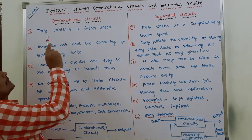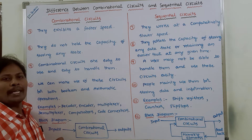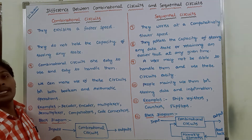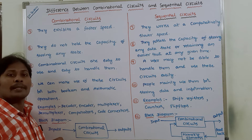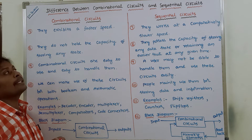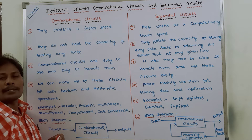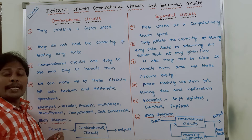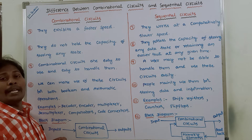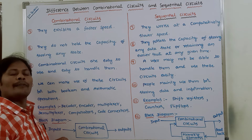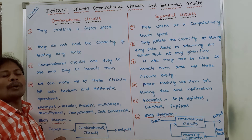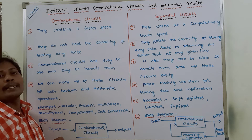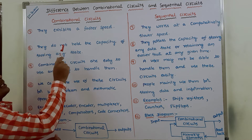Seventh point: combinational circuits exhibit a faster speed. Since the output depends only on the present inputs, operations can be done very fast. Hence combinational circuits operate at a faster speed. Whereas sequential circuits work at a comparatively slower speed, because the output depends not only on the present inputs but also on the past inputs.